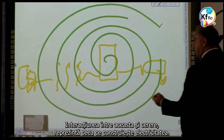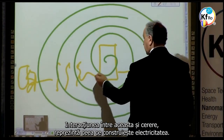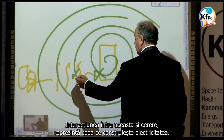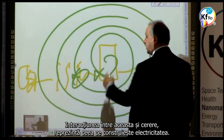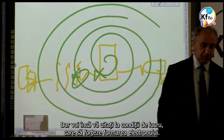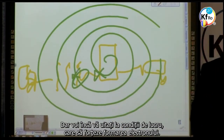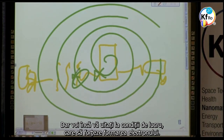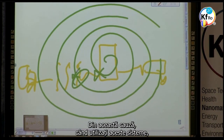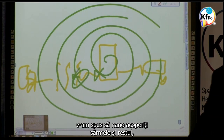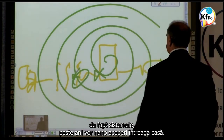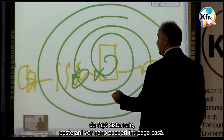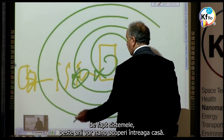The interaction between these and the demand is where electricity will reproduce. But you still look for a condition where you can enforce the electron formation. That's why when you use these systems, we tell you it goes through nano coating the wires and the rest. In fact, your system, over years, will nano coat the whole of your house.